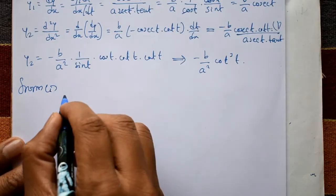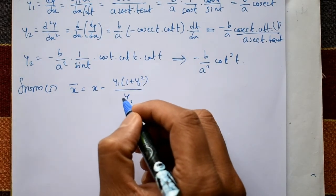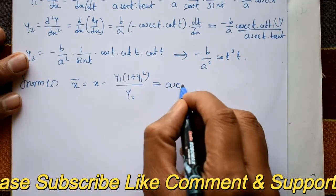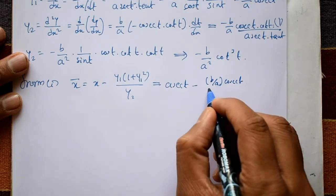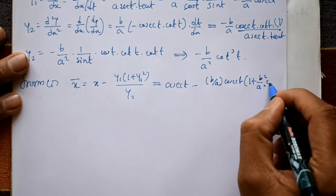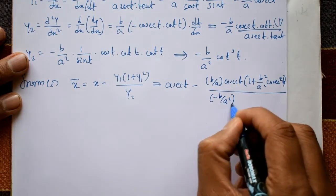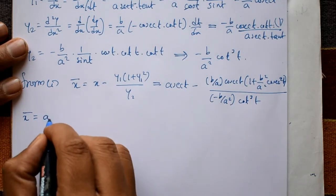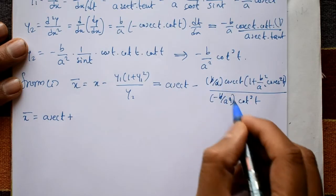Now substituting into equation number 1: x̄ = x - y1·(1 + y1²)/y2. Here x = a·sec(t), y1 = b/a · cosec(t), (1 + y1²) = 1 + b²/(a²)·cosec²(t) = b²/a²·cosec²(t) term, and y2 = -b/a² · cot³(t). The negatives cancel to give a plus sign, and terms simplify with b and a cancelling.